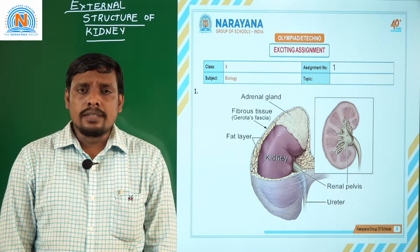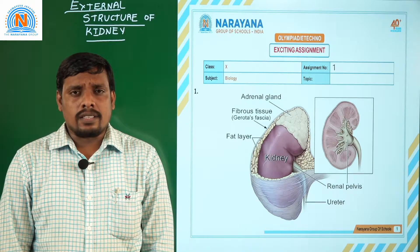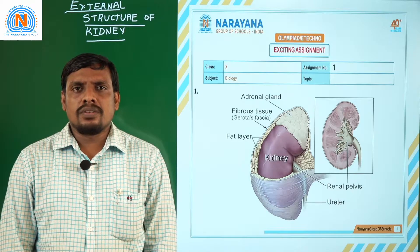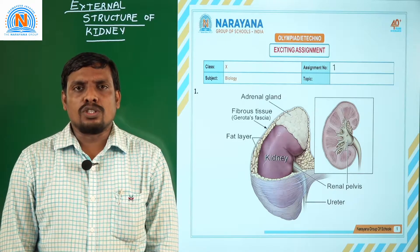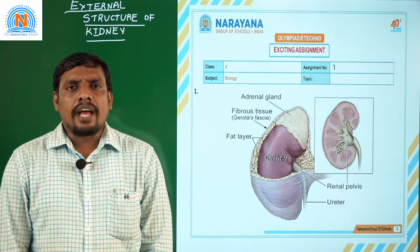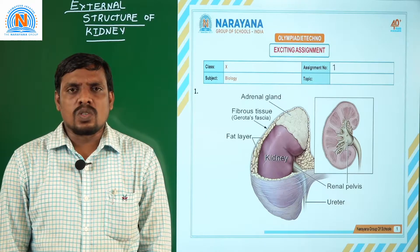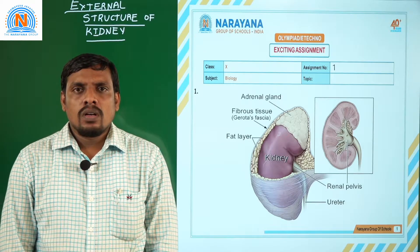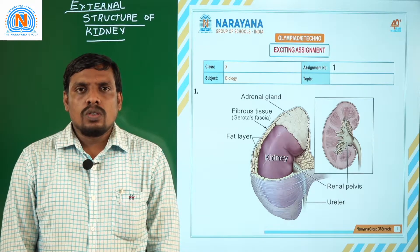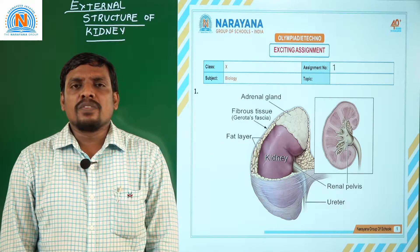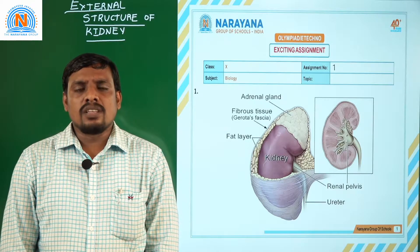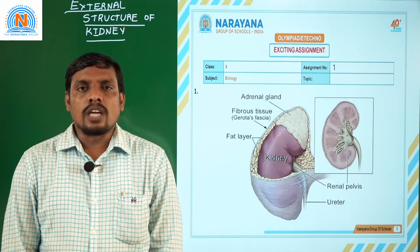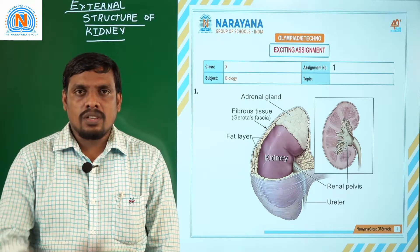Our lesson is the Excretory System. The first question is observation of external features of human kidney. During observation of external features of human kidney, what are your observations?